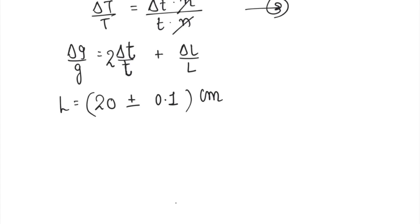And your time T is given as 90 seconds plus or minus—it was corrected to 1 second. Resolution of the wristwatch was 1 second. Now, by putting all those values, because this is L plus minus delta L and this is T plus minus delta T—